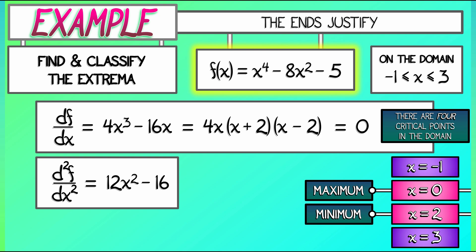And as we go from smaller to larger critical points, as we go from x equals negative 1 to x equals 0 to x equals 2 to x equals 3, we're going to alternate between maxima and minima. Because we know that x equals 0 is a maximum, x equals 2 is a minimum, we can infer that x equals negative 1 is a minimum, and x equals positive 3 is a maximum.